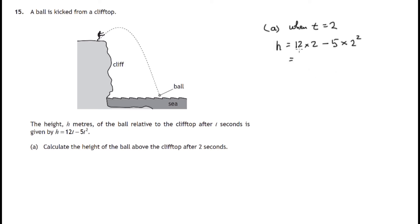So calculating: that's 24, 5 times 2 squared is 4, 5 times 4 is 20, so we have 24 minus 20, which gives us 4. And how's the height measured? It's measured in meters.